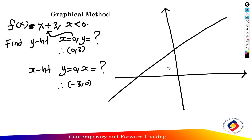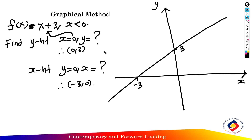Draw the straight line from negative infinity to positive infinity. The x-intercept is at (−3, 0) and the y-intercept is at (0, 3). The domain of the function is x less than 0.